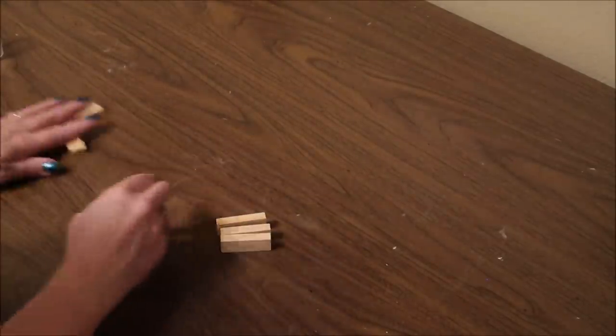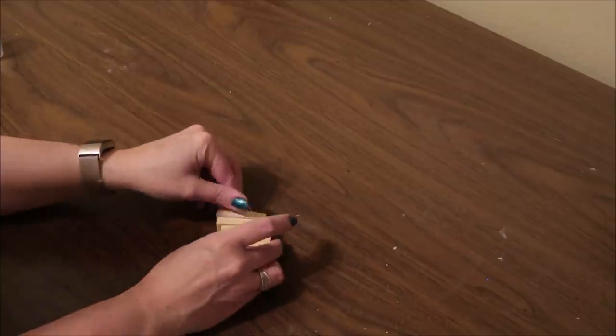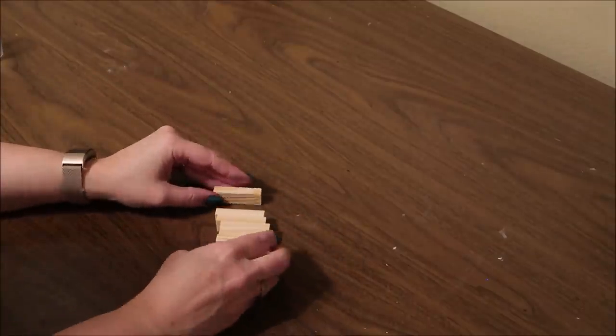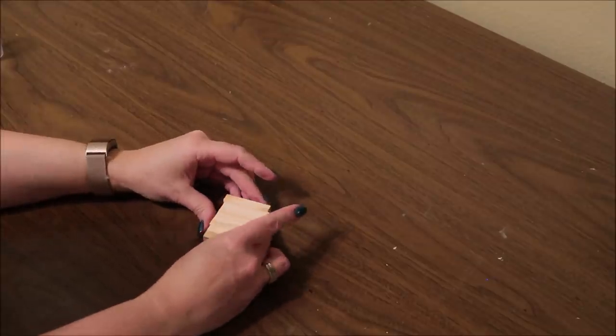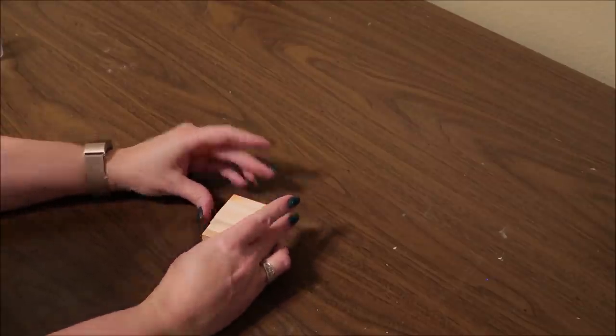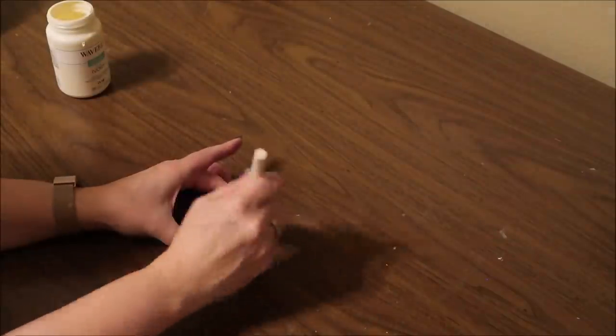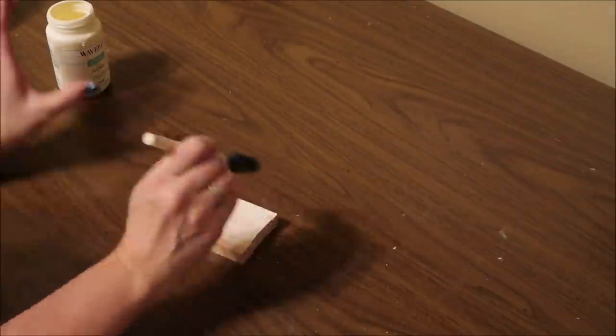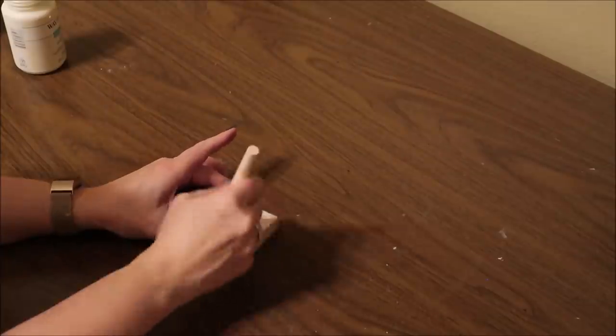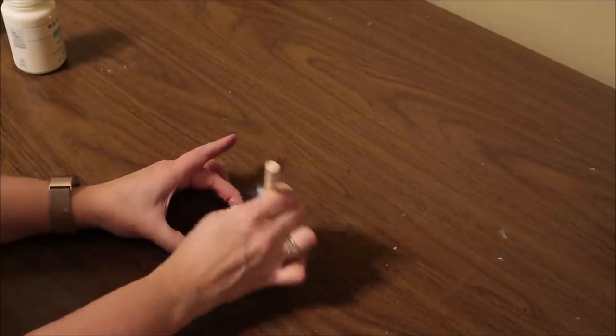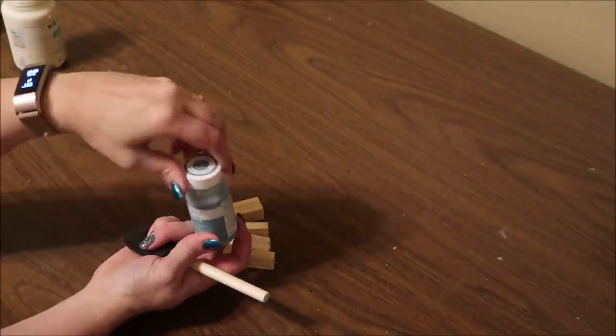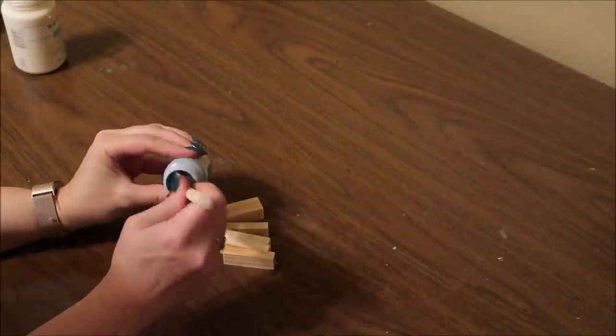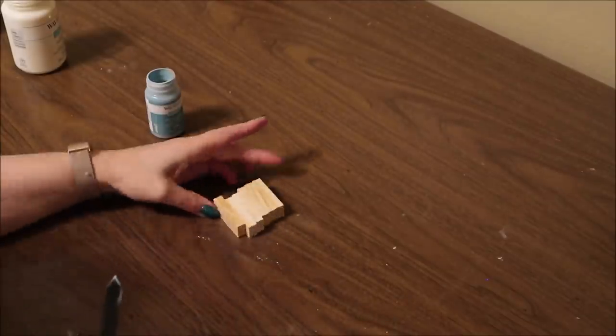Next, I'm going to take my foam brush and I'm going to paint two more boxes of the blocks with the ivory chalk paint. And I got my foam brush a little bit wet and then painted it so that the paint was a little bit transparent because I wanted the wood grain to show through a little bit. Then I'm going to take the last two boxes of blocks and I'm going to paint them with the agave colored chalk paint. And same thing, I'm going to have the foam brush be a little bit damp so that the paint's a little bit transparent and you can see the wood grain through the paint.